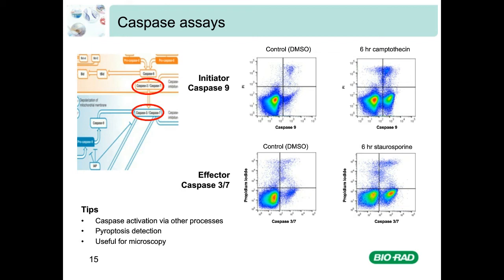Some tips when using caspase assays: apoptosis should be confirmed in more than one way, as caspases can be activated in processes other than cell death — for example, in erythroblasts during erythroid differentiation. We also have a caspase 1 kit which can be used for pyroptosis detection. Additionally, these kits can be used for microscopy.